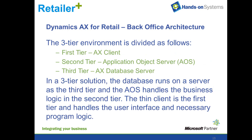The back office architecture comprises a three-tier environment. The first tier is the client, the second tier is the AOS — the Application Object Server — and the third tier is the AX database server. In this three-tier solution, the database runs on a server as the third tier, the AOS handles logic in the second tier, and the thin client is the first tier handling the user interface.